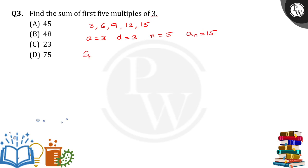So S_n is equal to n by 2, you can use a plus a_n for it. So 5 by 2 into 3 plus 15. How much? 18.